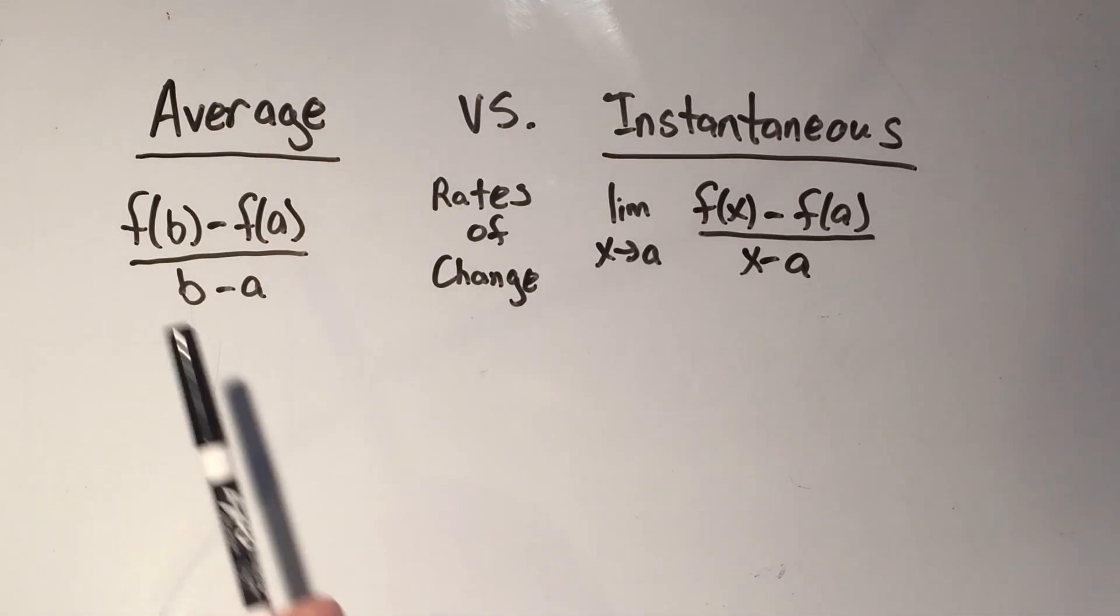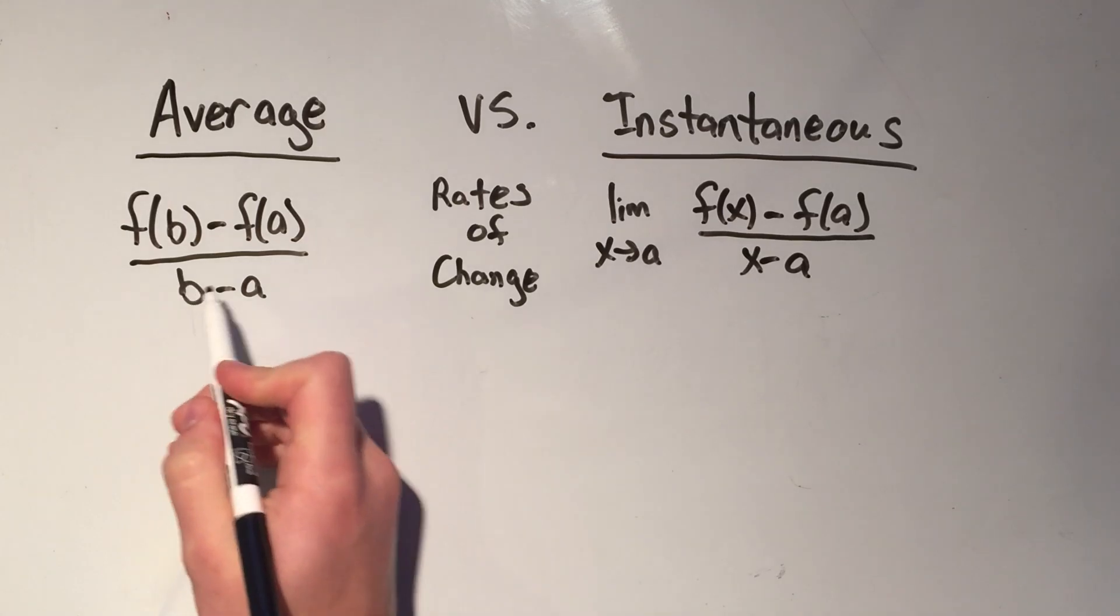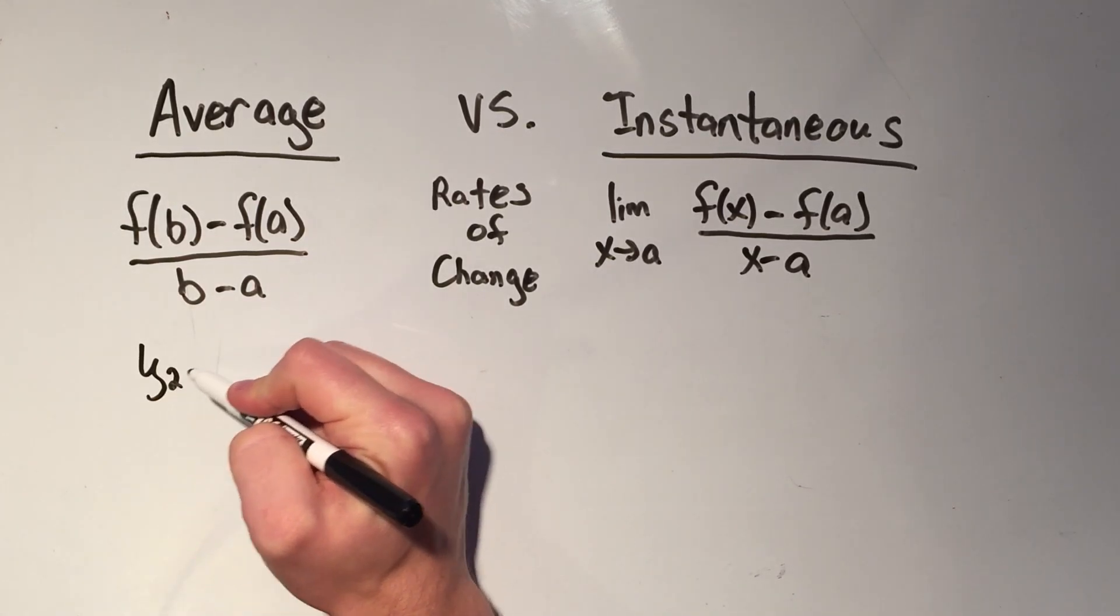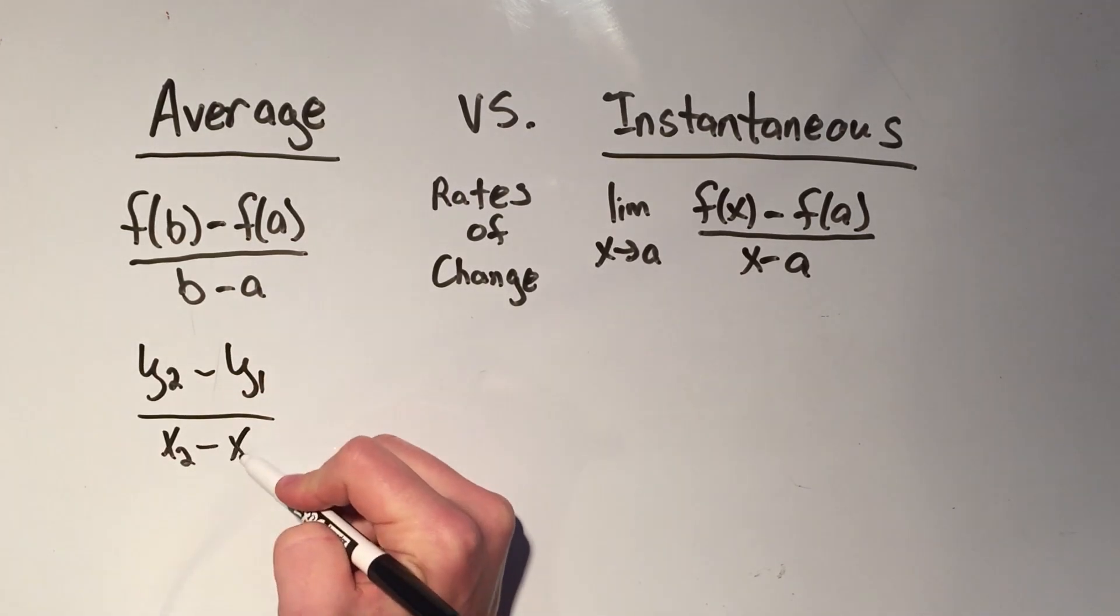The average rate of change is f of b minus f of a over b minus a. You might recognize this formula. This is just another way of writing y2 minus y1 over x2 minus x1 from algebra.